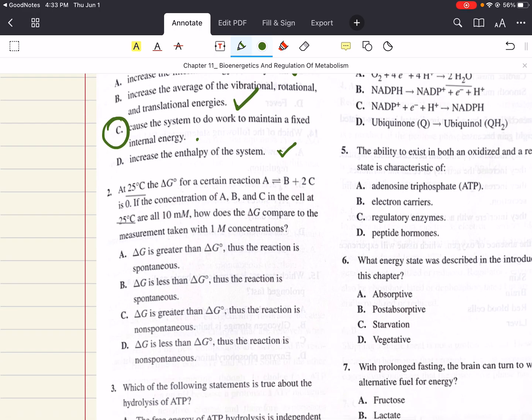2 says at 25 degrees Celsius, the delta G for a certain reaction is zero. If the concentration of A, B, and C in the cell at 25 degrees Celsius are all 10 millimolar, how does the delta G compare to the measurement taken with one millimolar concentration? To solve this question, we're going to use the equation delta G equals delta G not standard plus RT ln Q.